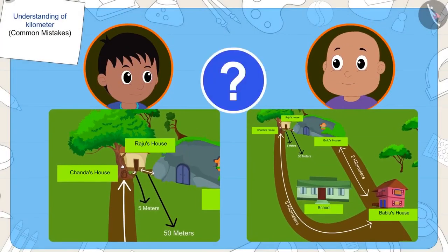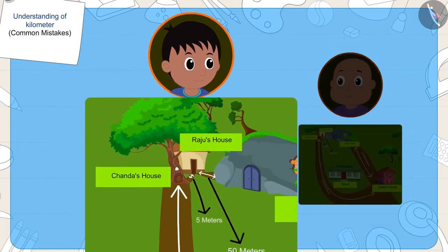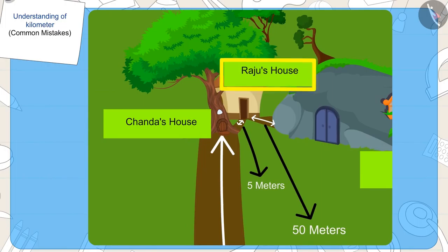So, whose point is correct? Right! Raju's argument is right. His house is closer to Chanda's house.